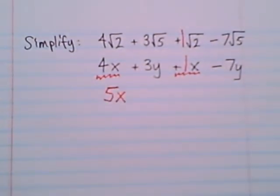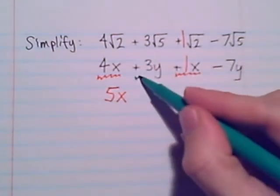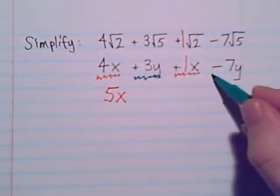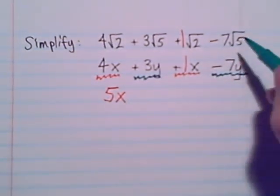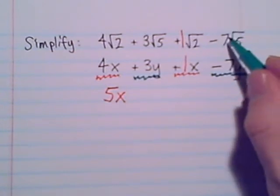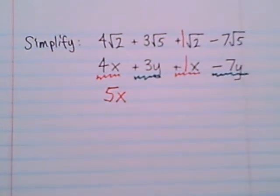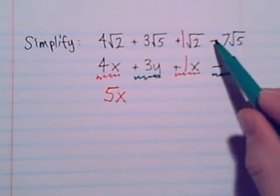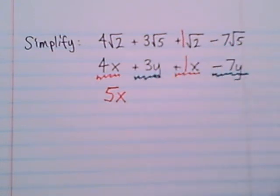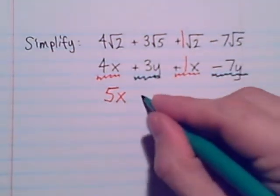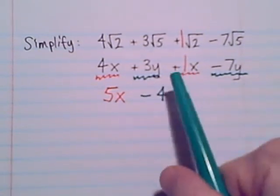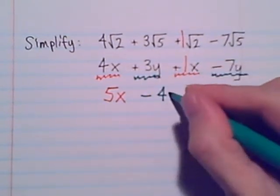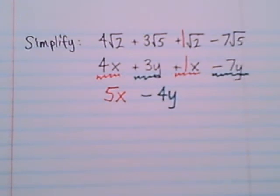So same with this guy. I don't see a coefficient, I know it's a 1. When I go to combine these like terms, 4x plus 1x, I'm not going to change the x. I'll just add the number parts. 4 plus 1 will give me 5.